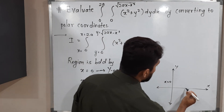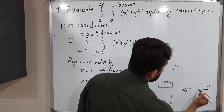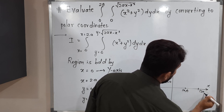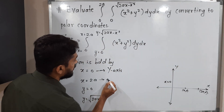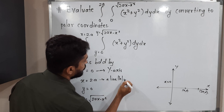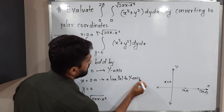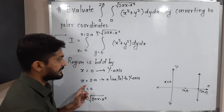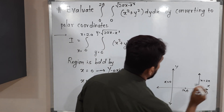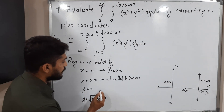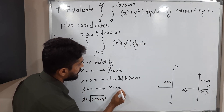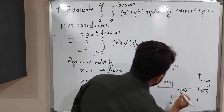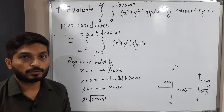Here a is any arbitrary number. So I am considering the point (a, 0). The line x = 2a is parallel to the Y-axis. The X-axis corresponds to y = 0.